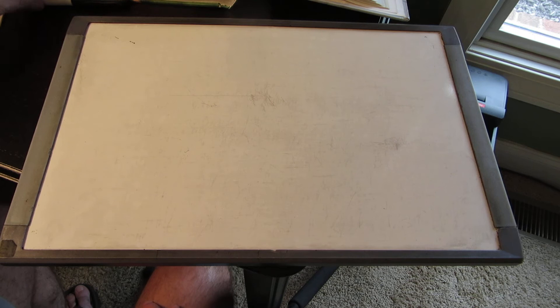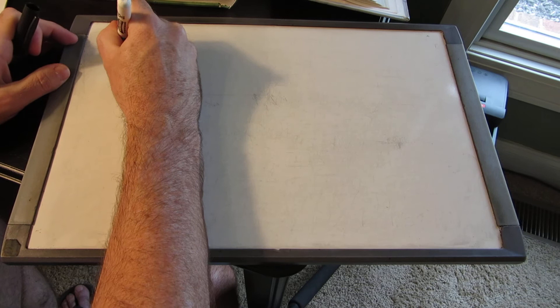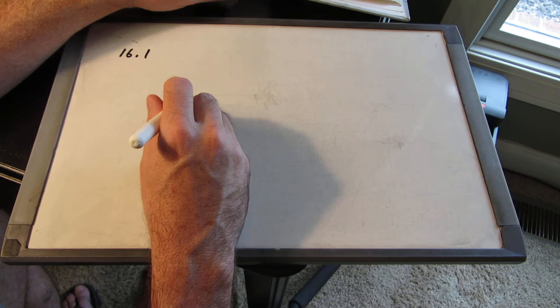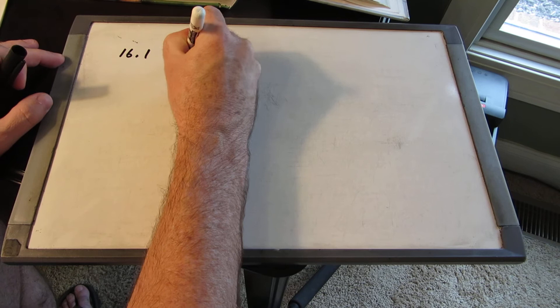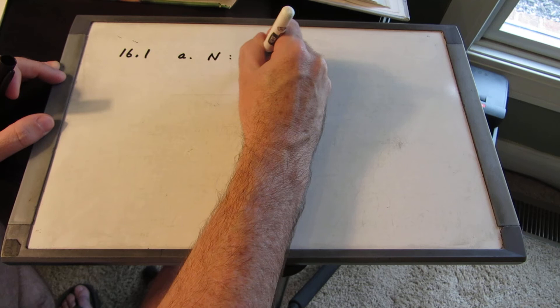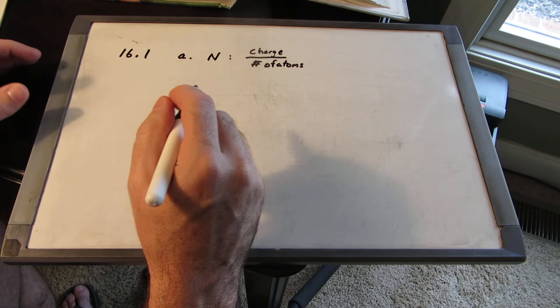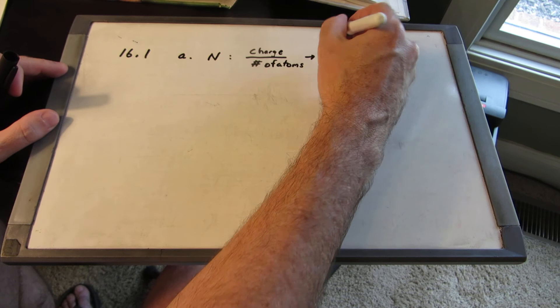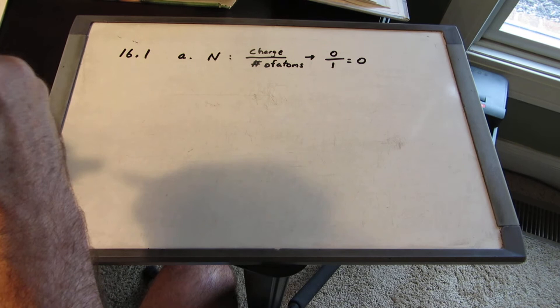We are on page 527 in the book. We will do On Your Own 16.1, which asks: what is the oxidation number of nitrogen in each of the following substances? For nitrogen just by itself, the oxidation number is the charge divided by the number of atoms — that is going to be rule number one, the most important rule. The charge on this nitrogen atom — they don't give a charge, so the charge is zero. Zero over one: the oxidation number is zero.